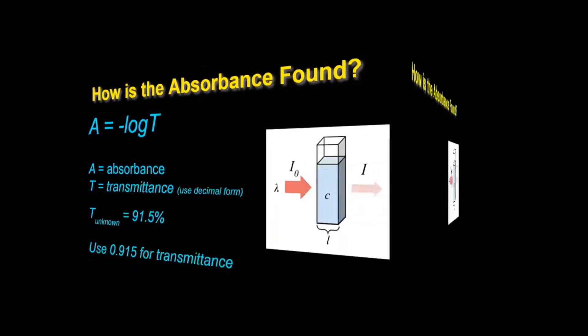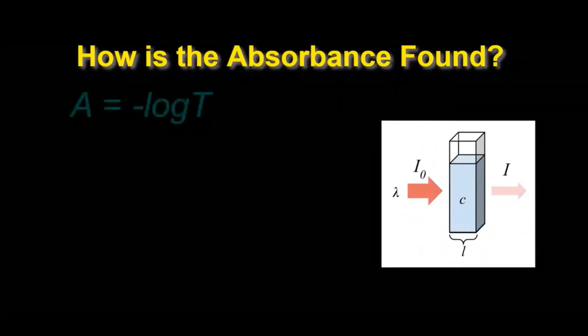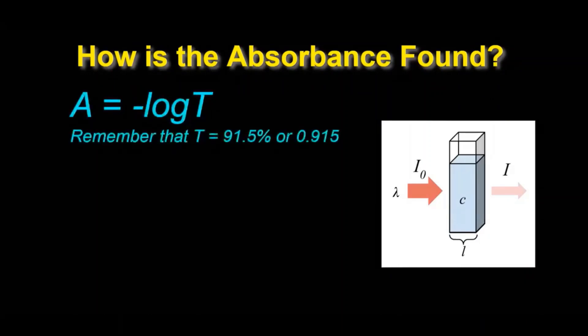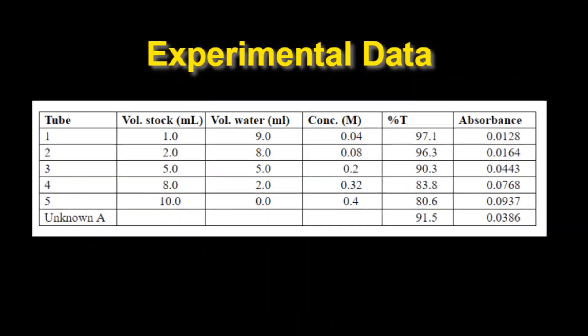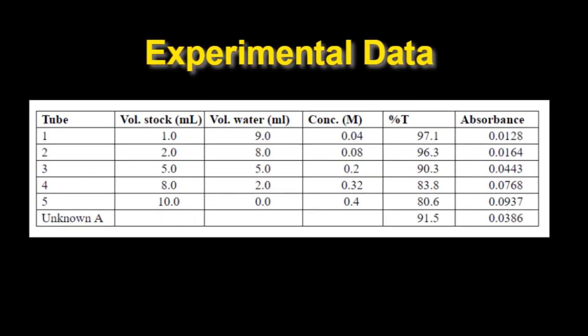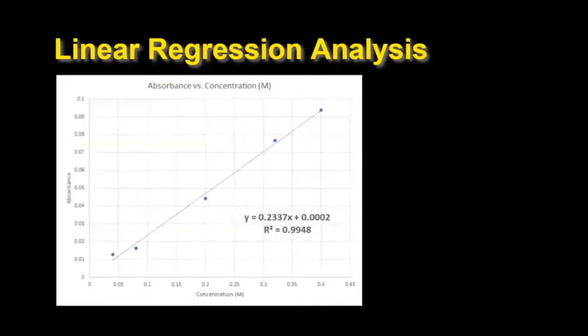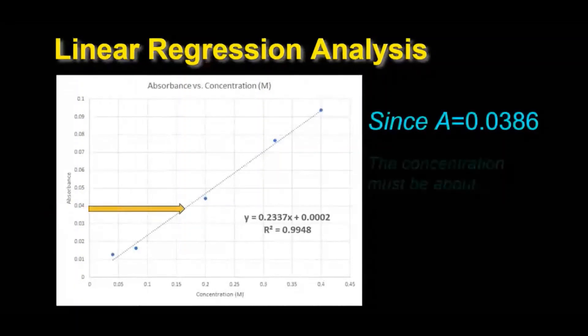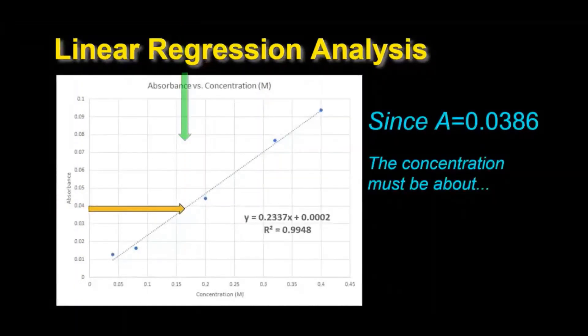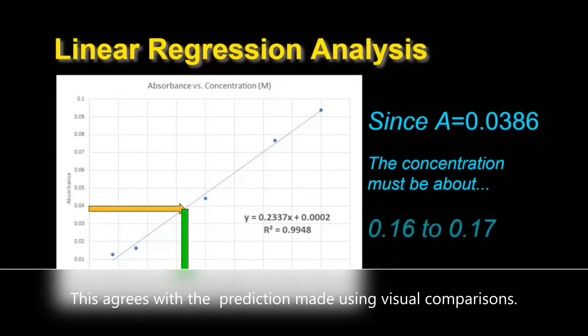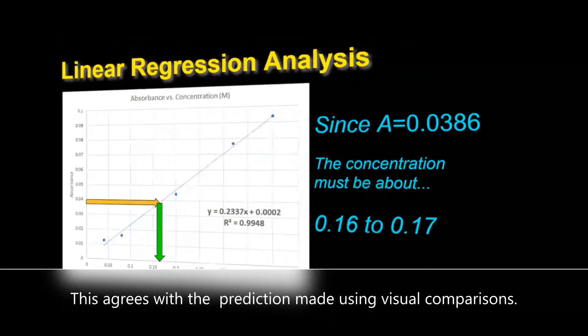Using the decimal form of that 0.915 we can calculate the absorbance for the unknown sample. Using the equation A is equal to the negative log of the transmittance. That works out to be 0.0386 for the unknown sample. We can use the calculated absorbance to estimate the concentration. Since the absorbance was 0.0386 it looks like the concentration should be about somewhere between 0.16 to 0.17.